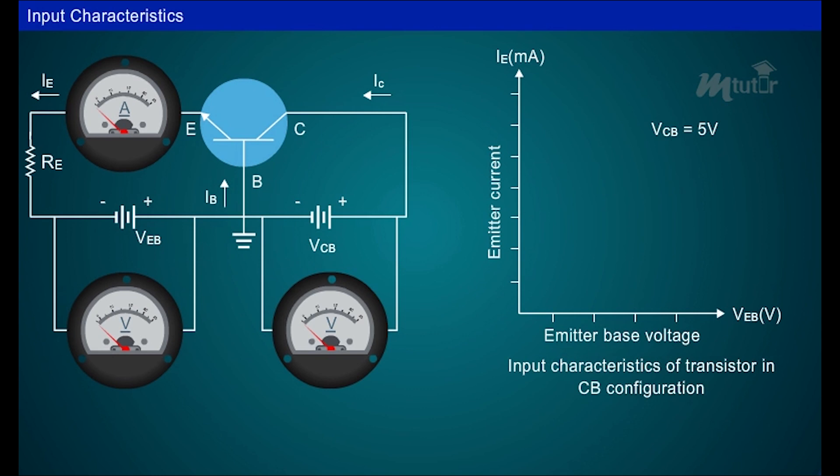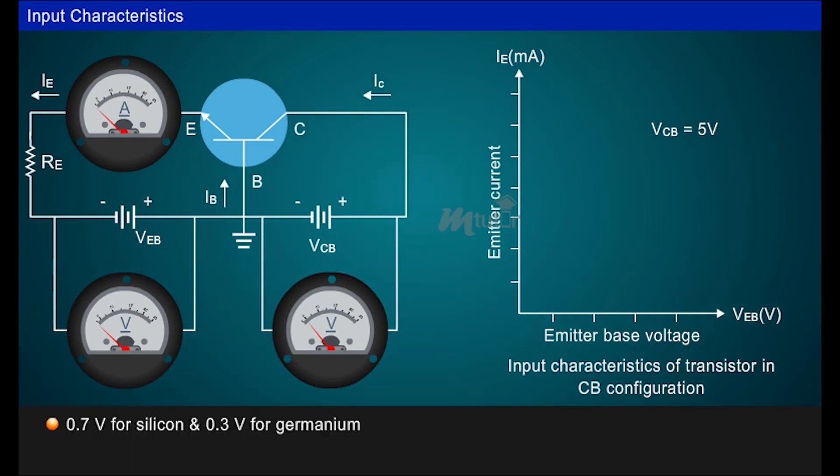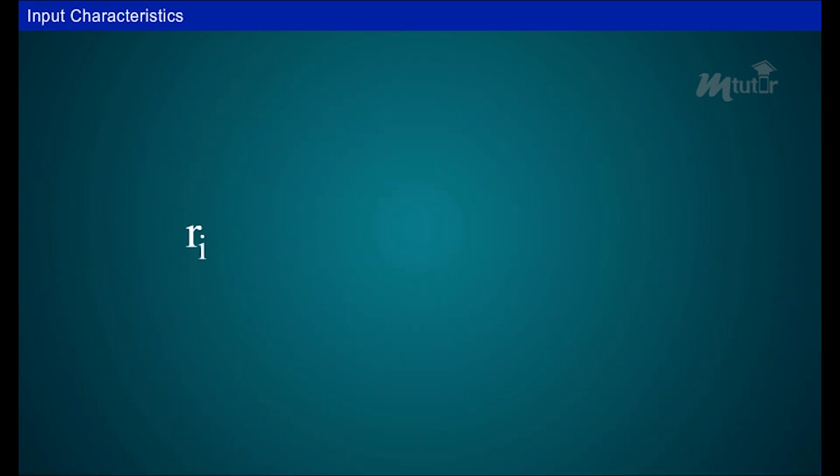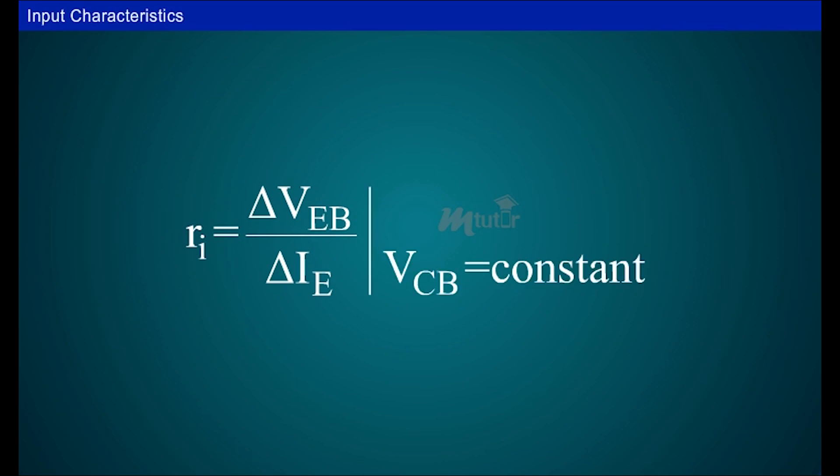Now, let us plot the input characteristics for VCB equal to 5V. After the cut-in voltage, 0.7V for silicon and 0.3V for germanium, the emitter current IE increases rapidly with small increase in emitter base voltage VEB. It means that input resistance is very small, because input resistance is the ratio of change in emitter base voltage to the resulting change in emitter current at constant collector base voltage.